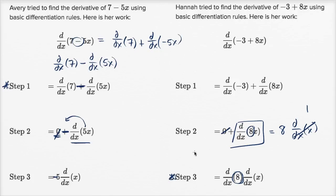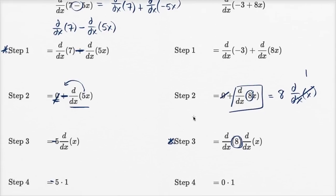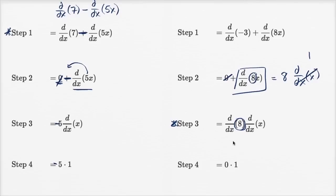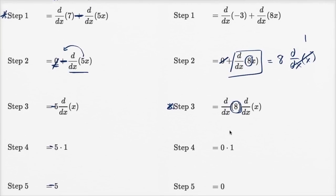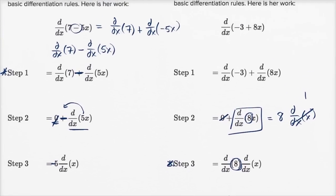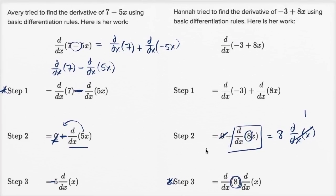You can see, instead of getting a final answer of 8, she is getting a final answer of - she assumes, well the derivative of 8 is 0 times the derivative of x is 1, zero times 1, and she gets zero, which is not the right answer. So she makes a mistake at step three, and Avery made a mistake at step one.